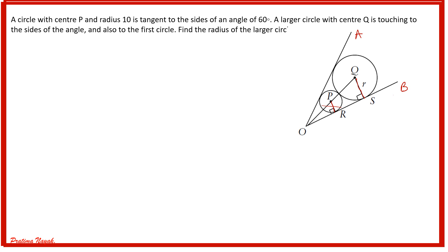Angle AOB is 60 degrees. That means angle QOB will be 30 degrees, half of it. Next, POR is a right triangle, so we can apply trigonometric ratios here. For 30 degrees, PR is the perpendicular and OP is the hypotenuse. Opposite of 90 degrees is hypotenuse.